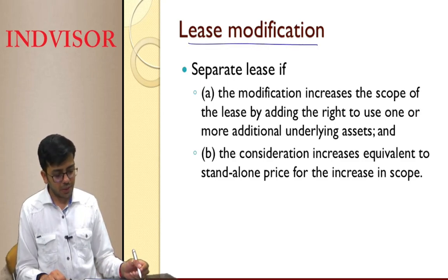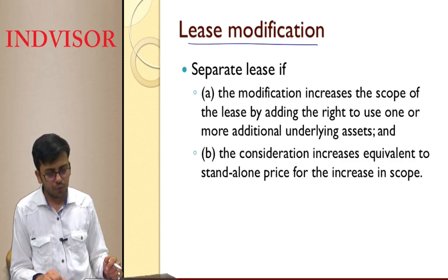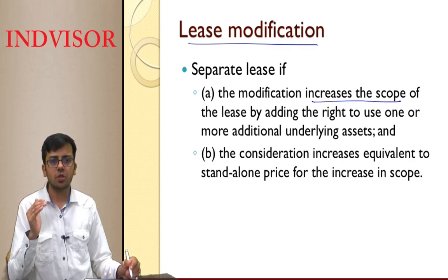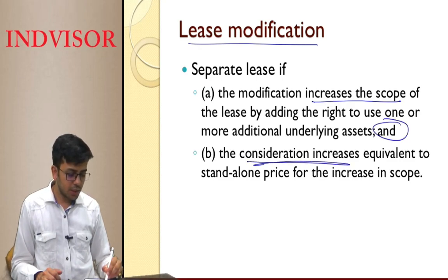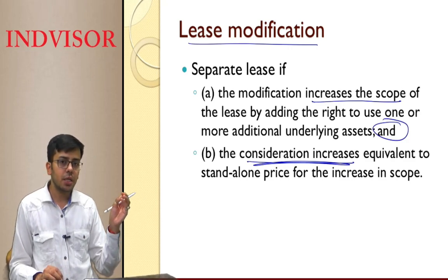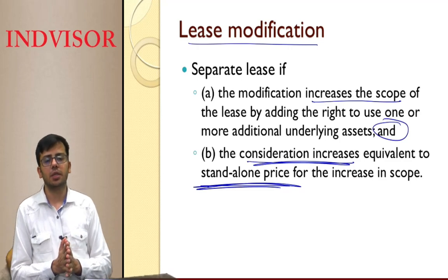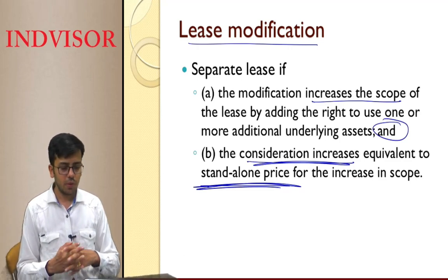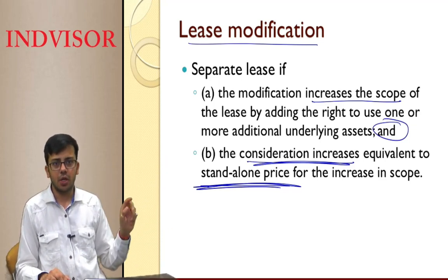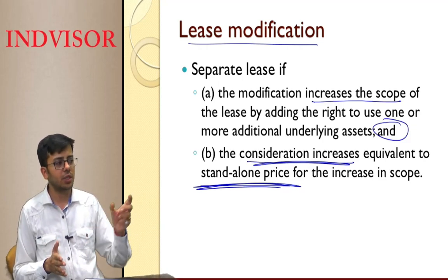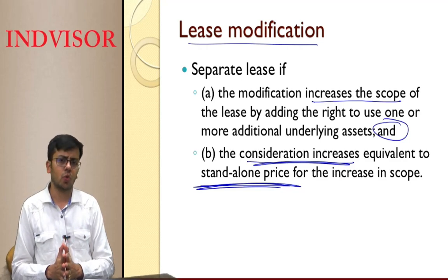Regarding lease modification — in general, we consider a lease modification as a separate contract and not part of the existing contract if two conditions are met: (a) there is an increase in scope, e.g., leased area increases from 10,000 to 15,000 square feet, and (b) the consideration for that additional area is equivalent to its standalone price. If either condition doesn't exist, we consider the modification as part of the existing lease.